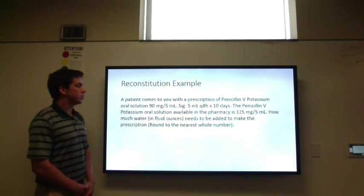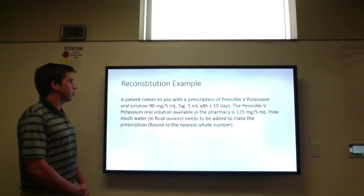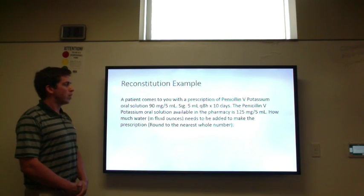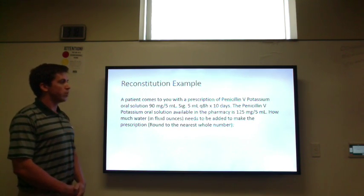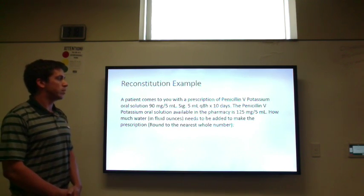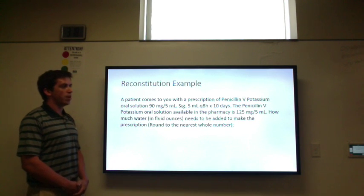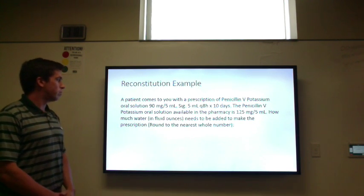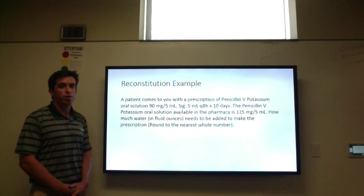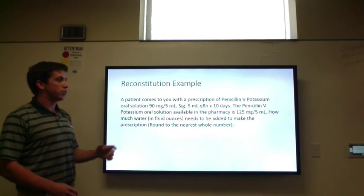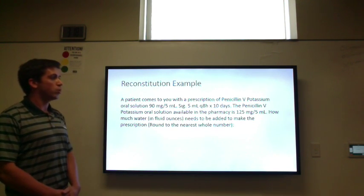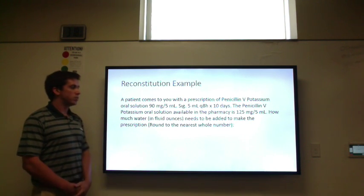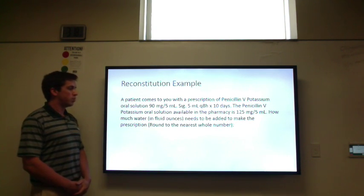So here we have a reconstitution example. A patient comes to you with a prescription of penicillin V potassium oral solution for 90 milligrams per 5 milliliters, and instructions are 5 milliliters every 8 hours for 10 days. The penicillin V potassium oral solution available in your pharmacy is at a concentration of 125 milligrams per 5 mls. How much water in fluid ounces needs to be added to make the prescription?